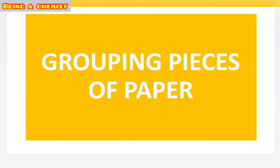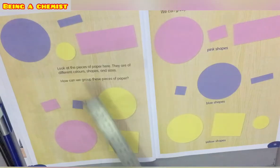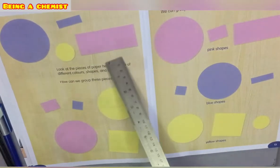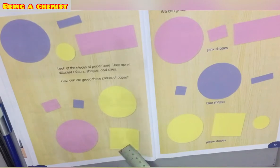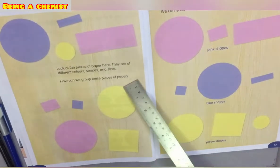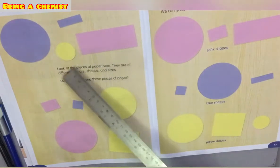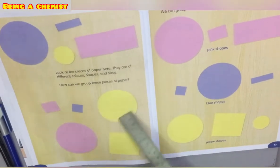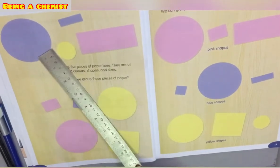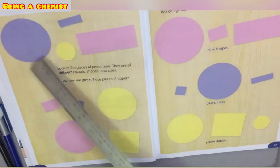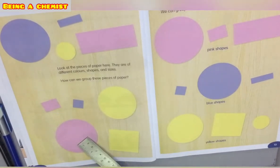Look at these pieces of paper. They are shown here — how colorful they look! There are different colors: pink, yellow, and blue. They are of different colors, as you can see — different colored paper pieces.